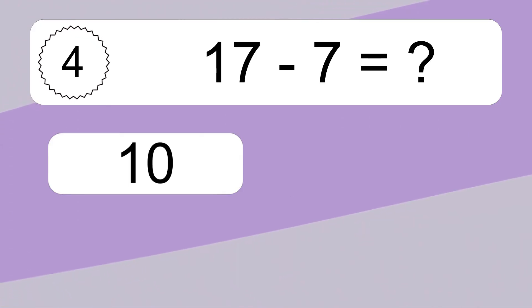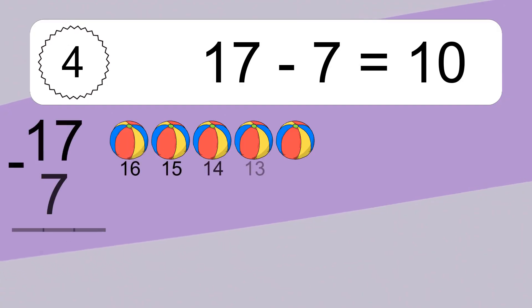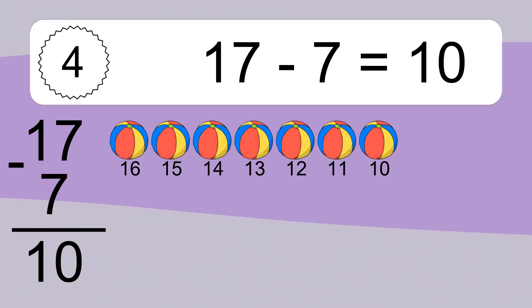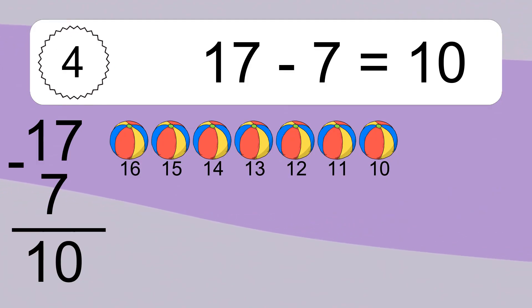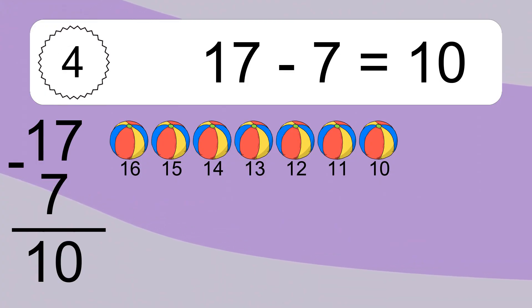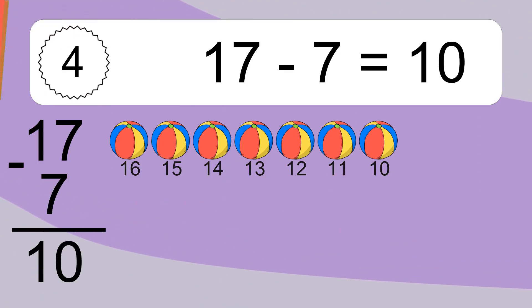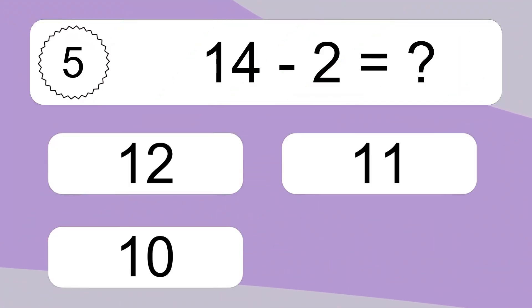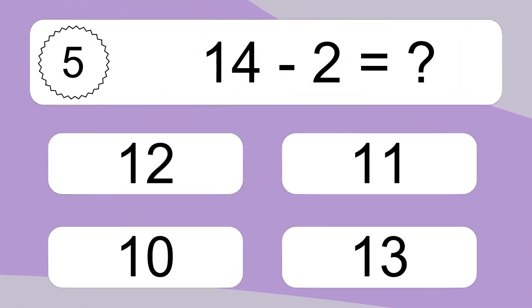17 minus 7 equals what? 17 minus 7 equals 10. Let's count it: 16, 15, 14, 13, 12, 11, 10.